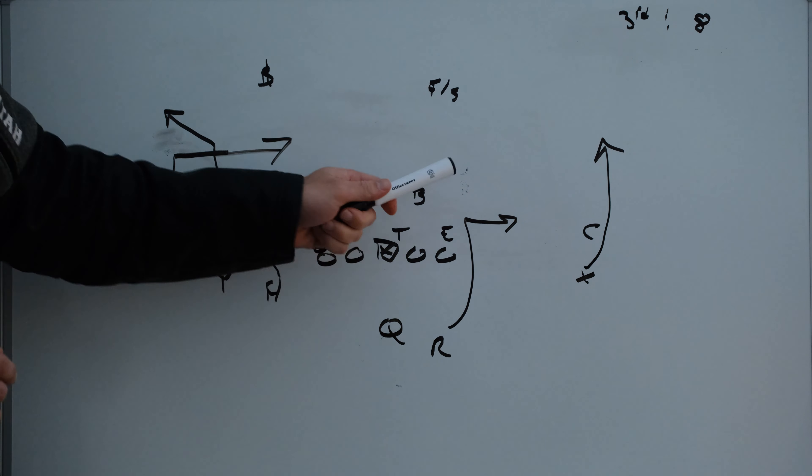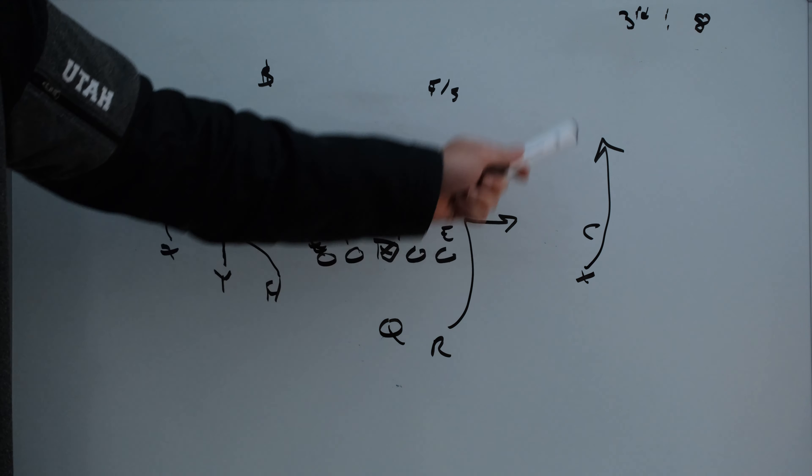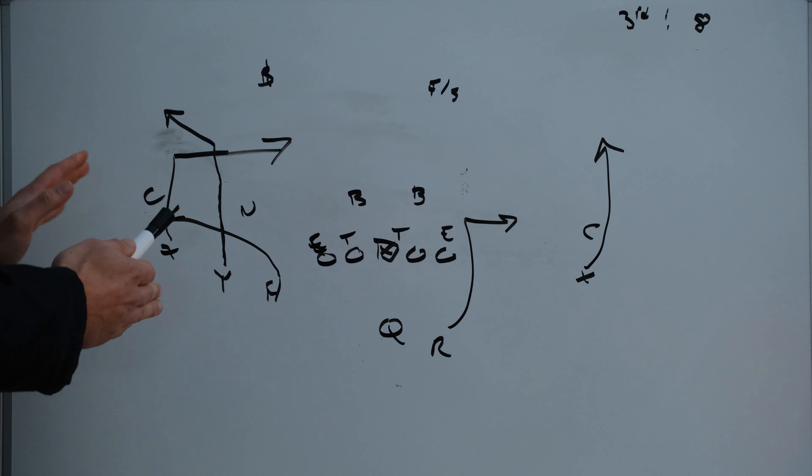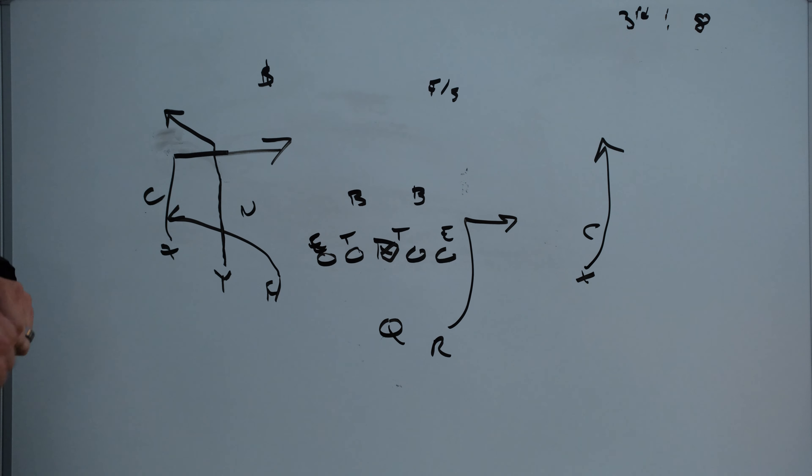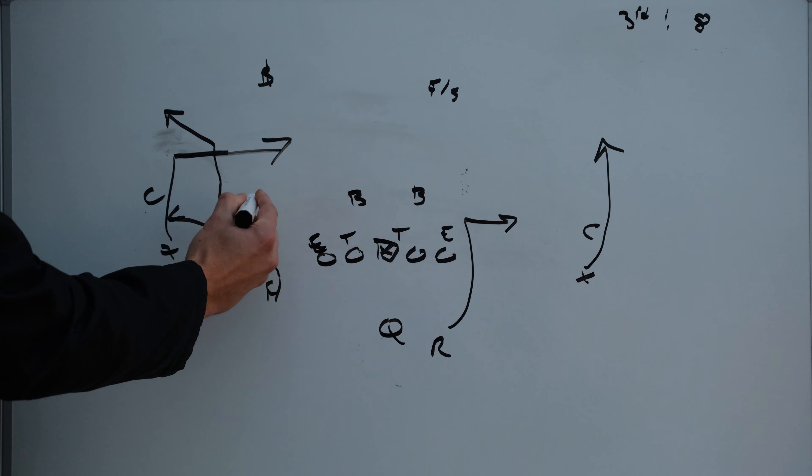I would imagine going through this play if you had one high safety you'd want to look to the one on one side. Since you have two high safeties you're going to look to the three man side where there's three receivers. And really it just comes down to this nickel guy what he decides to do.